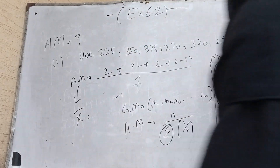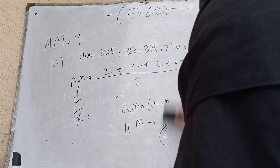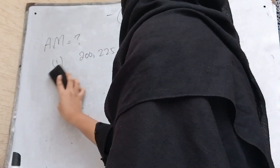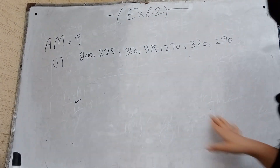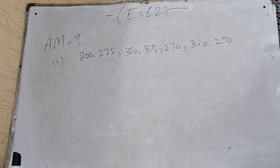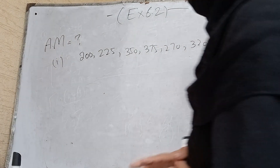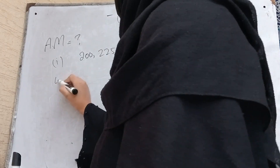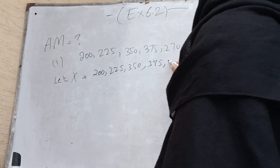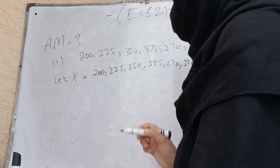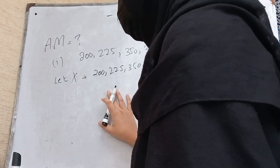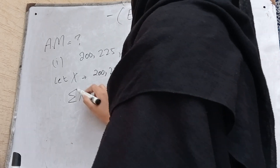Now we read arithmetic mean by the direct method. Find the arithmetic mean by direct method for the following set of data: 200, 225, 350, 375, 270, 320, and 290. Let x equal the given data, and sigma x means the sum of all values.